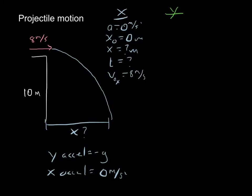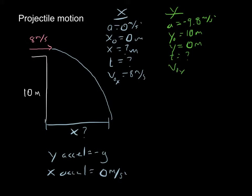If I throw it exactly horizontal, all of that velocity is in the x direction — 8 meters per second. In the y direction, acceleration is gravity: negative 9.8 meters per second squared. My initial y position is 10 meters up on the cliff, and my final y position is zero meters. I don't know the time, and my initial velocity in the y direction is zero meters per second, because everything initially is horizontal — just like dropping an object.